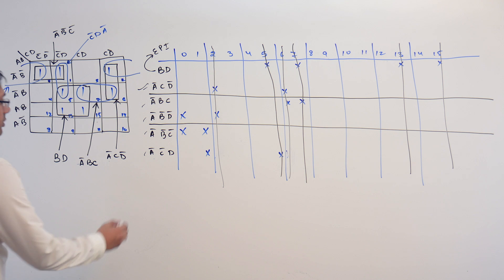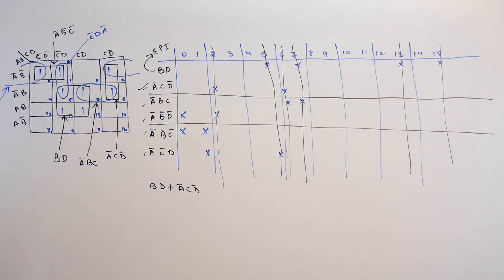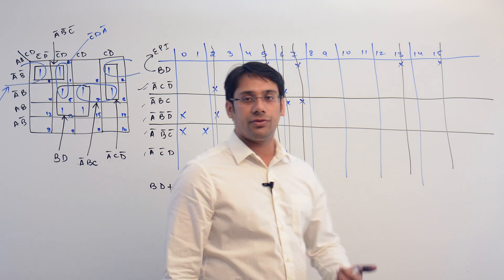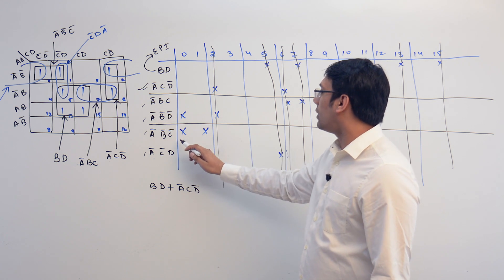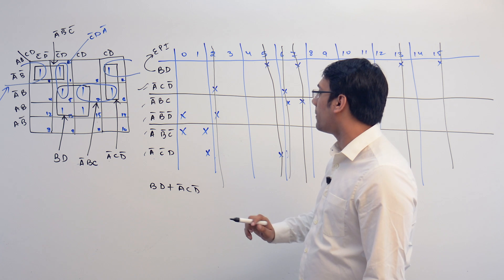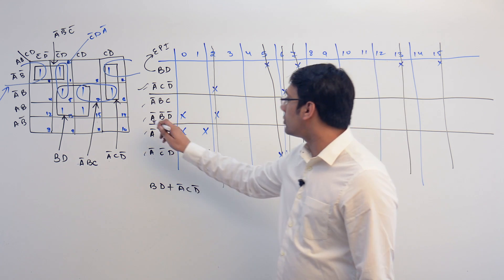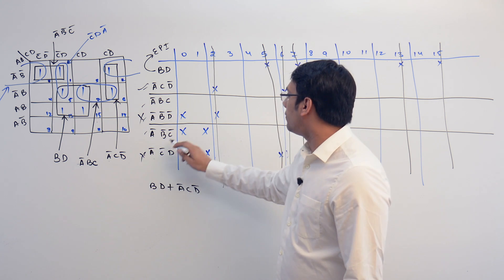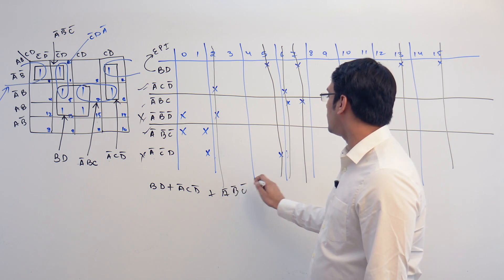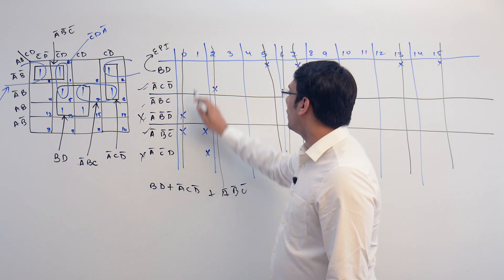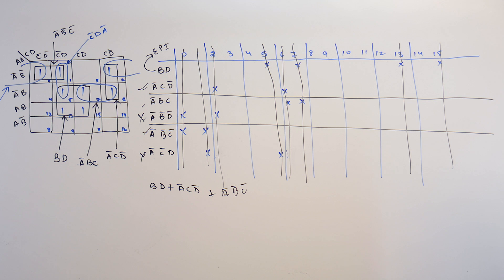The solution should contain A'CD', so the solution so far is BD + A'CD'. Now, if we take A'B'D' or A'CD', neither covers minterm 1. But if we take A'B'C', it covers 1 as well as 0. So we are covering every minterm in this solution.